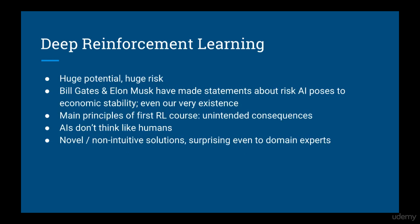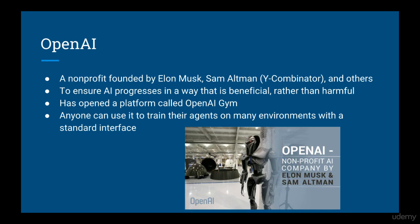While deep reinforcement learning in AI has a lot of potential, it also carries with it a huge risk. Bill Gates and Elon Musk have made public statements about some of the risks that AI poses to economic stability and even our existence. One of the main principles of training reinforcement learning agents is that there are unintended consequences — AIs don't think like humans, and so they come up with novel and non-intuitive solutions to reach their goals, often in ways that surprise domain experts. OpenAI is a non-profit founded by Elon Musk, Sam Altman, and others in order to ensure that AI progresses in a way that is beneficial rather than harmful, partly motivated by the existential risk that AI poses to humans.